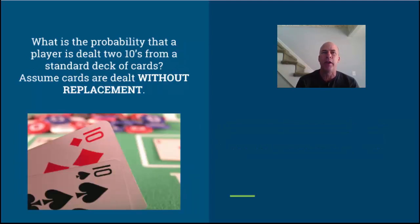Let's look at a second example. Let's deal cards from a deck. Imagine I have a deck of cards here. I shuffle them and deal out the first two cards. What is the probability that a player is dealt two 10s from a standard deck of cards? There's something big here. Usually when we play probability games with cards, we deal out cards one at a time and we don't replace them. You'll want to be on the lookout for the instructions without replacement.